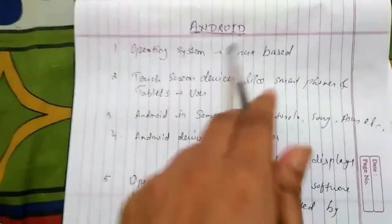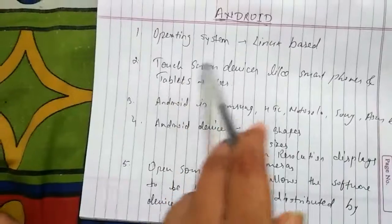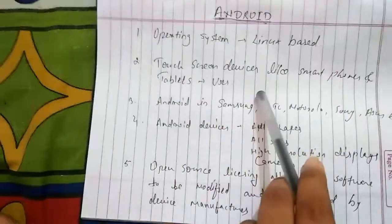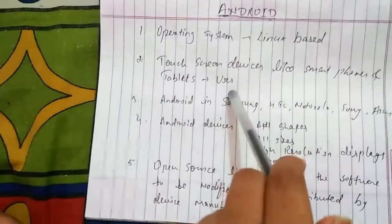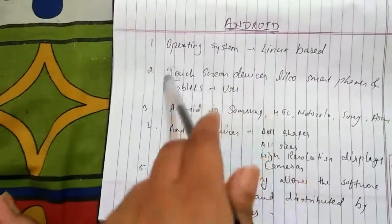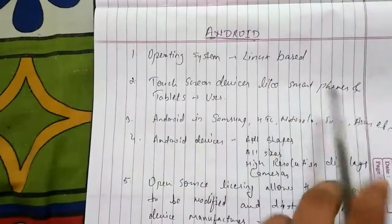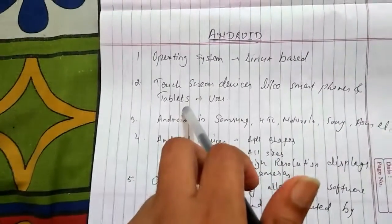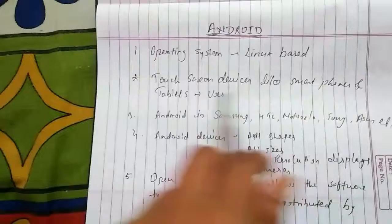Android is mainly a Linux-based operating system. The second point states that touchscreen devices like smartphones and tablets are using this. The users who use touchscreen devices — whether phones, tablets, or notebooks — are all using the Android operating system.